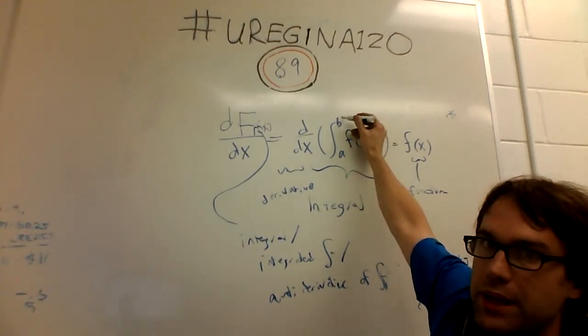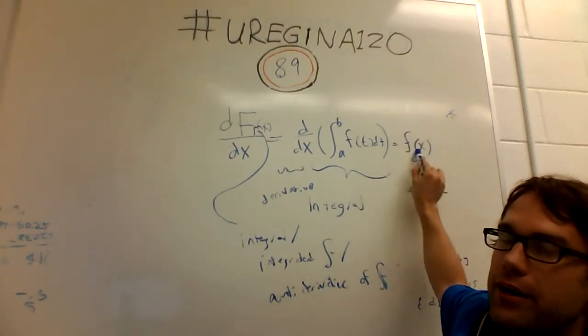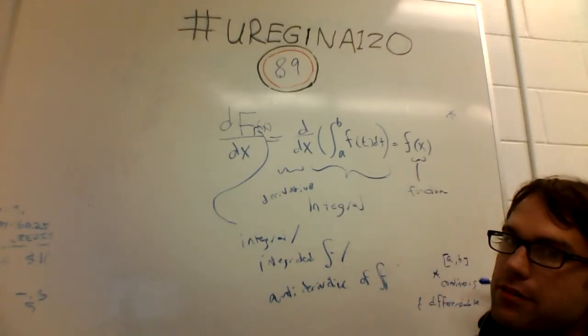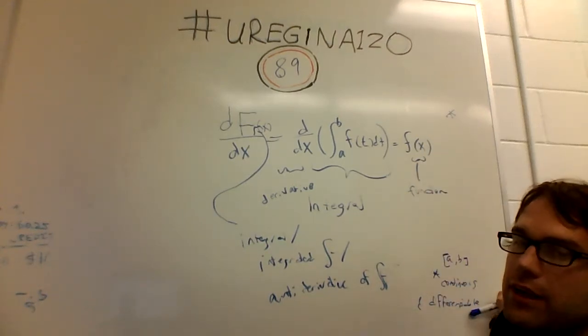This whole thing is only true in this region a to b. So from a to b. And in the region from a to b, this function is defined. It's defined as differentiable, and again we'll get into what that means later. And it's continuous.